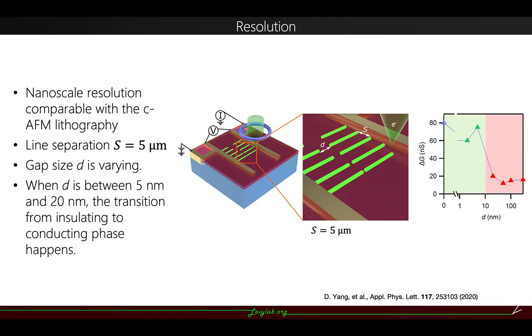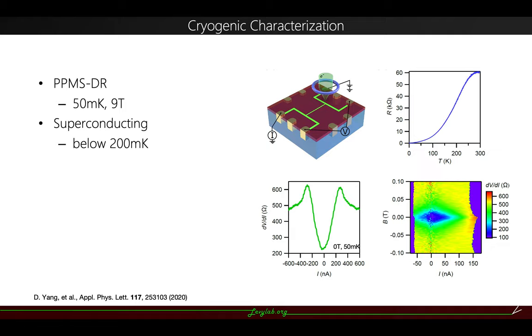With this plot, you can see a conductance jump plot with respect to the gap size. And there is a significant change when the gap size is between 20 and 5 nanometers. So that's why we claimed a writing resolution to sub-10 nanometers, which is at the same scale comparable with the conductive AFM lithography.